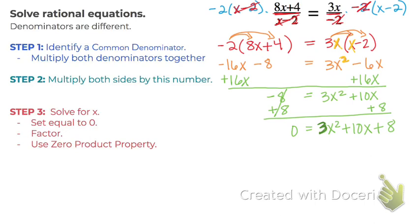So remember when you're using the grouping method, you're looking for two numbers that multiply to give us whatever the first times the last number are. So multiply to give us positive 24.